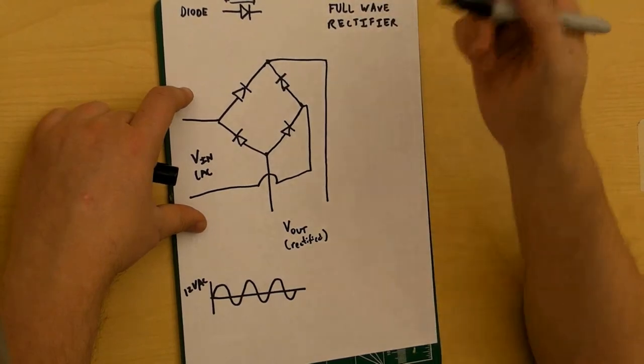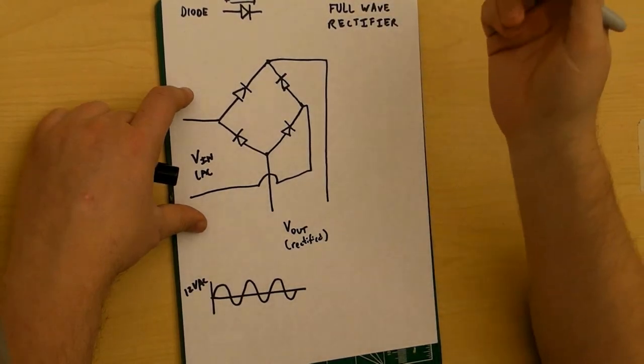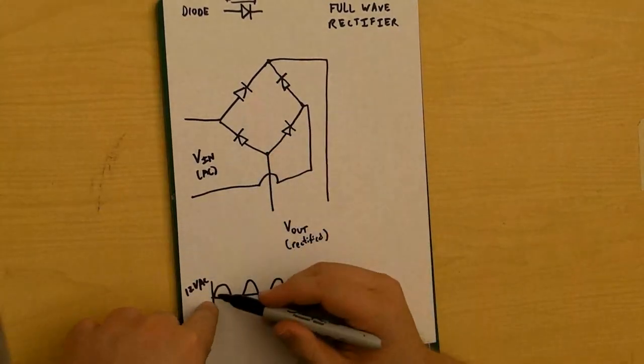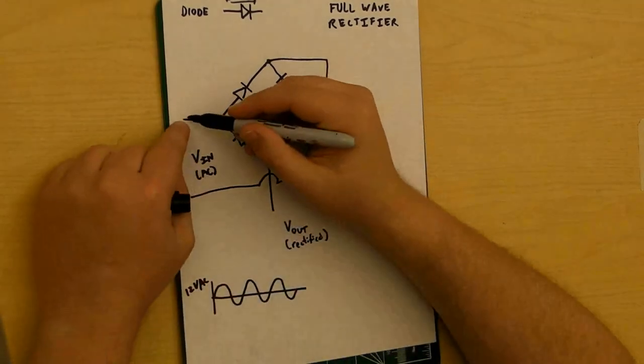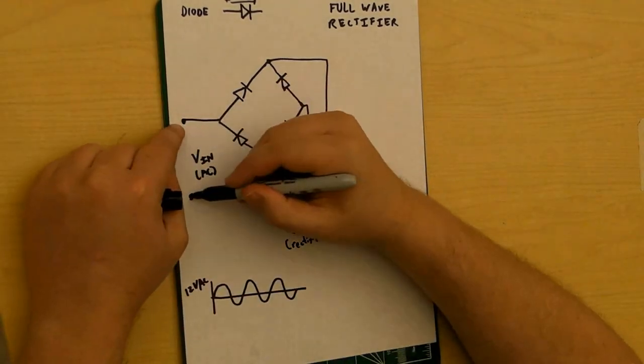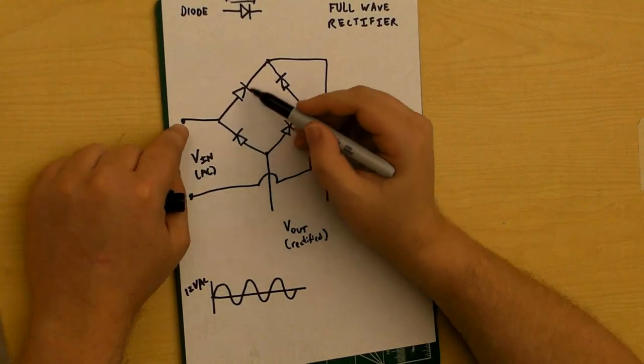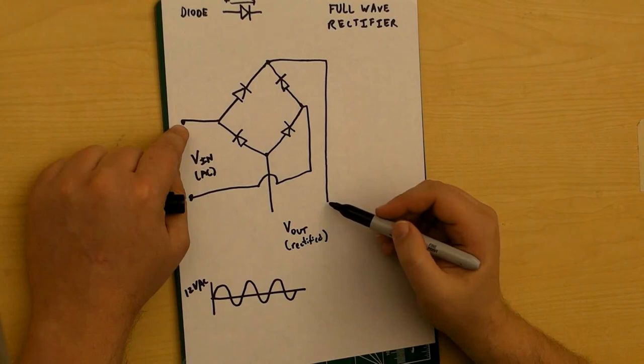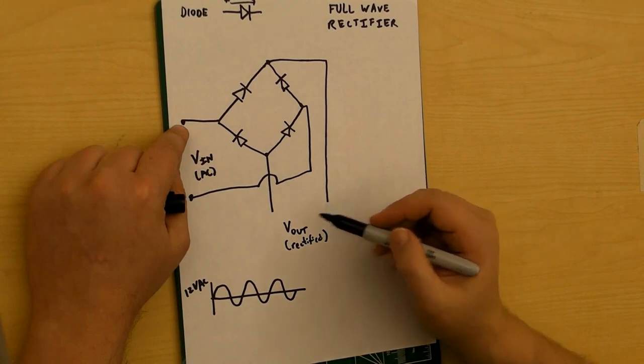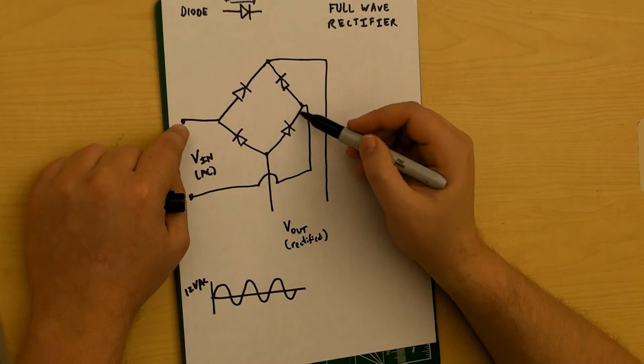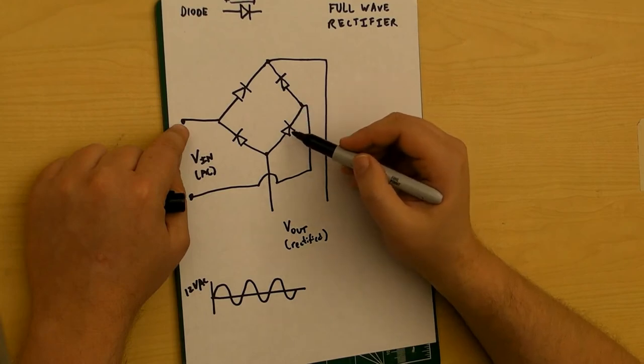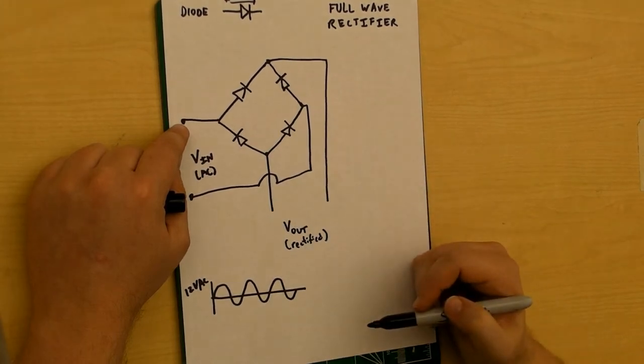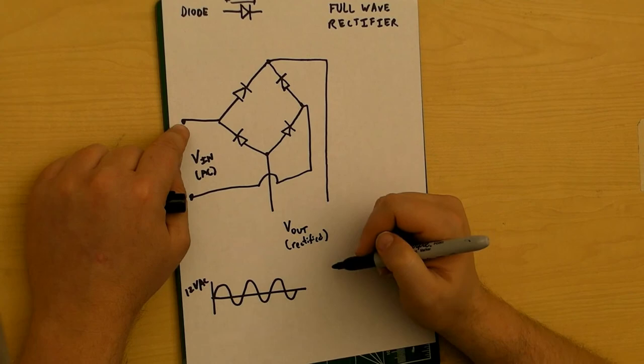Let me actually go through this and show you how it's going to work. Suppose that on the positive side when AC is first starting out and it's going positive, this terminal is going to be positive here. And the current is going to flow this way to here and out this way. So this side is going to be positive on the voltage out. Negative is going to flow this way through the diode and come out this side, the negative side of V out.